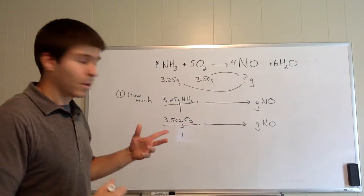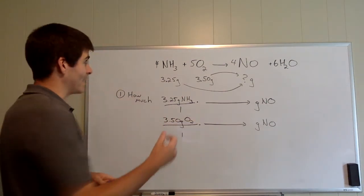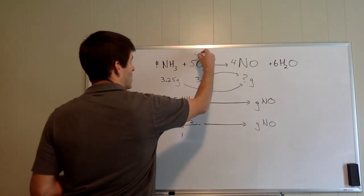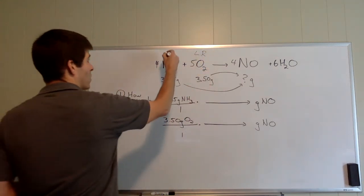Okay, so I've worked this one out and I know that the oxygen is actually going to make less. So the oxygen is going to be my limiting reactant, and the ammonia is going to be excess.